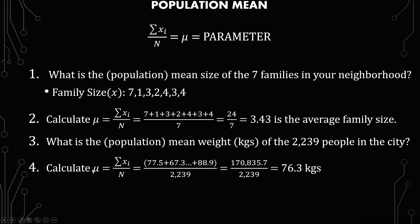You calculate mu just like before — the summation of xi over N — but you use something like Excel to summarize the 2,239 people. It's not going to be done by hand or on paper. Then you divide by 2,239, because that's the population of the city. The total here is 170,835.7 divided by 2,239. This number is just the summation of the weights of all 2,239 people.